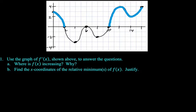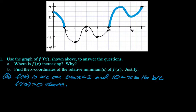So I'm going to say that f of x is increasing on 0 inclusive to 2, and 10 to 16, including 16, because f prime is greater than 0 there.